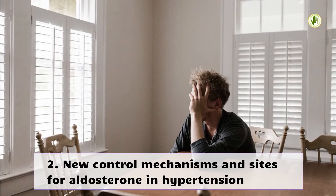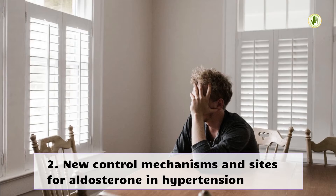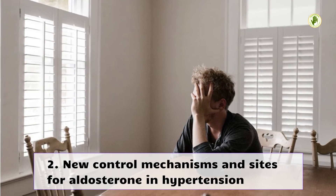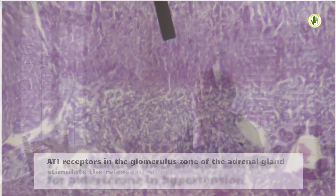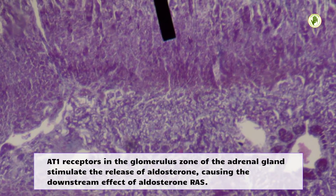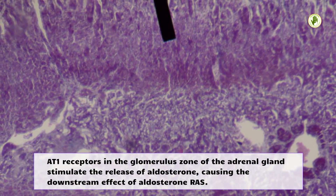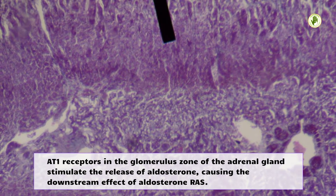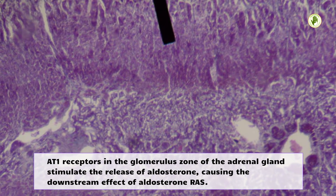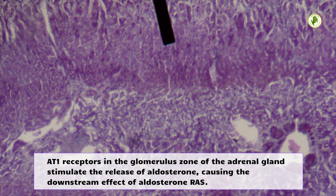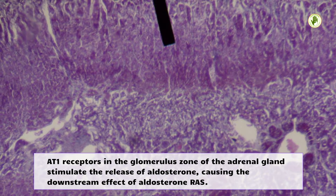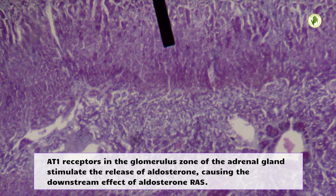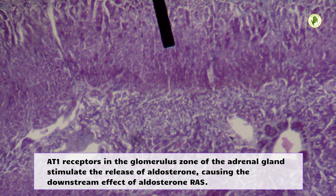New control mechanisms and sites for aldosterone in hypertension: AT1 receptors in the glomerulosa zone of the adrenal gland stimulate the release of aldosterone, causing downstream effects of aldosterone within the RAS.